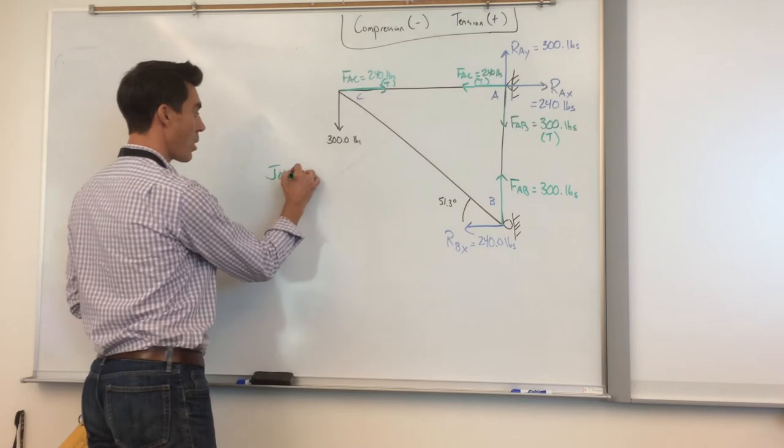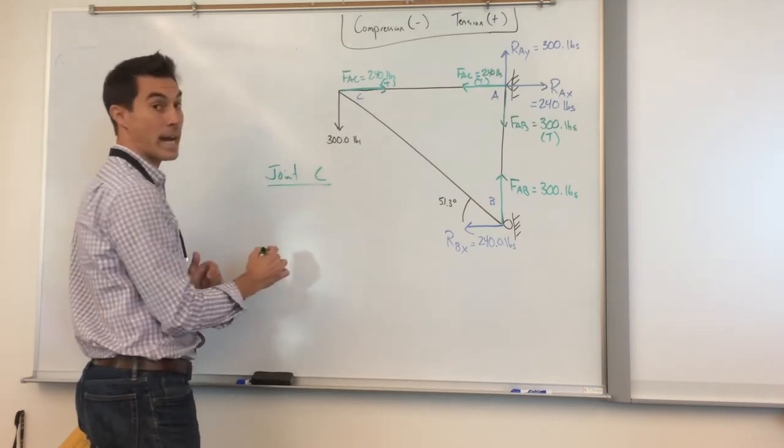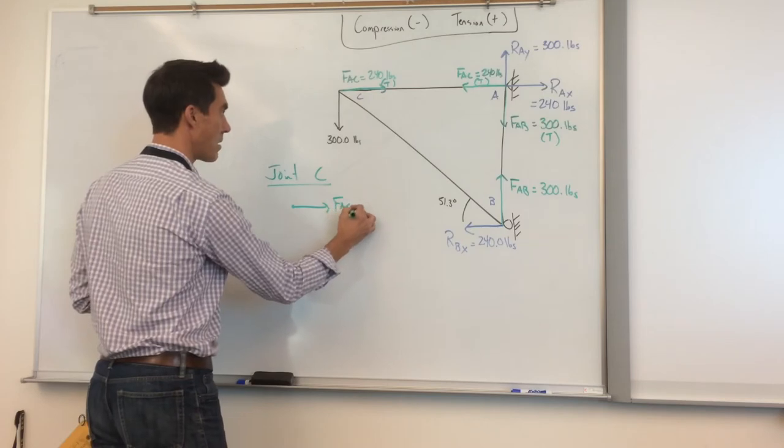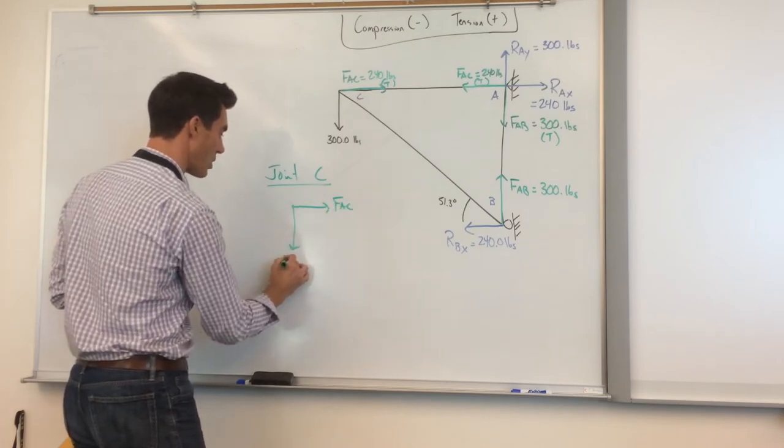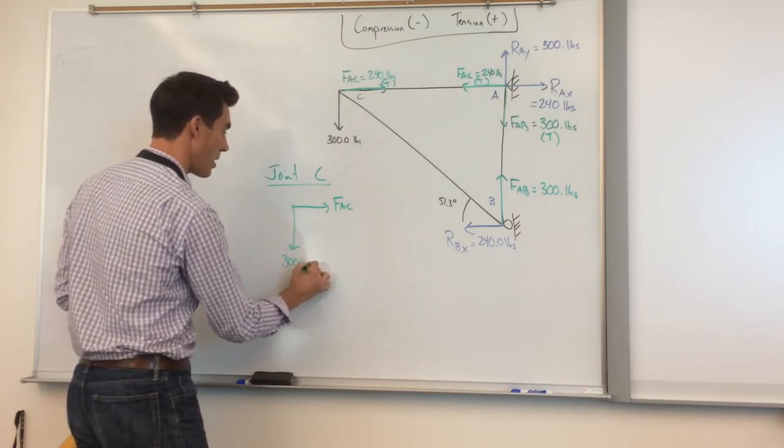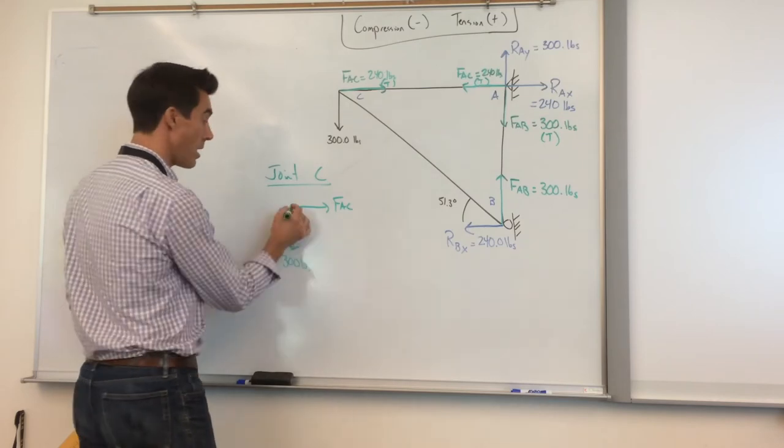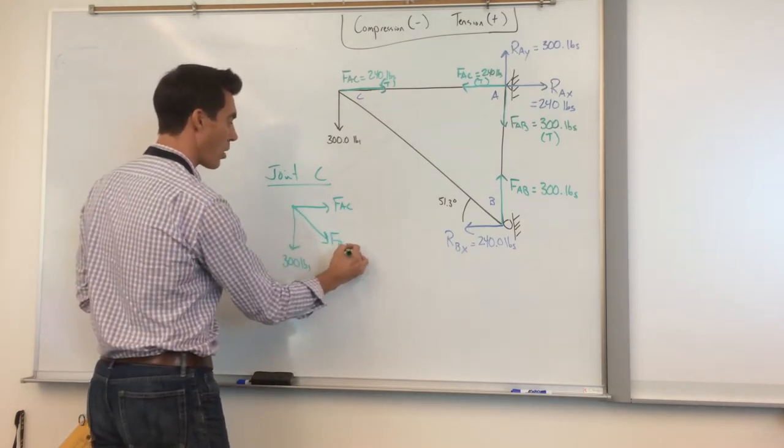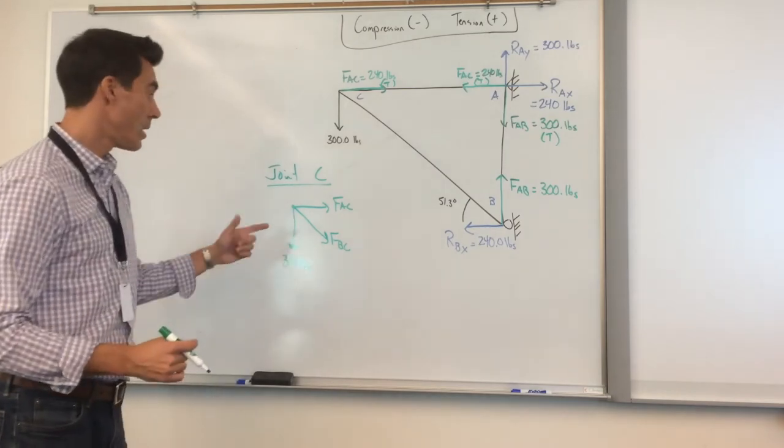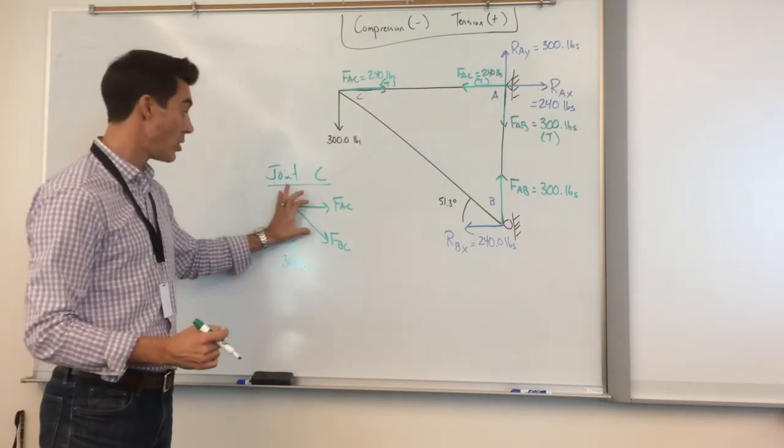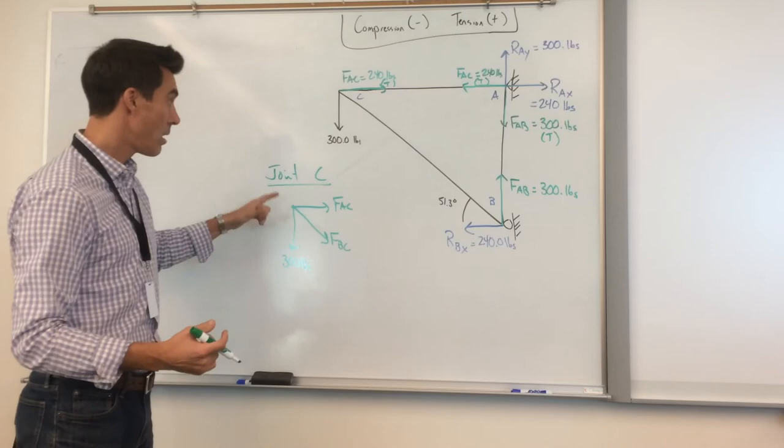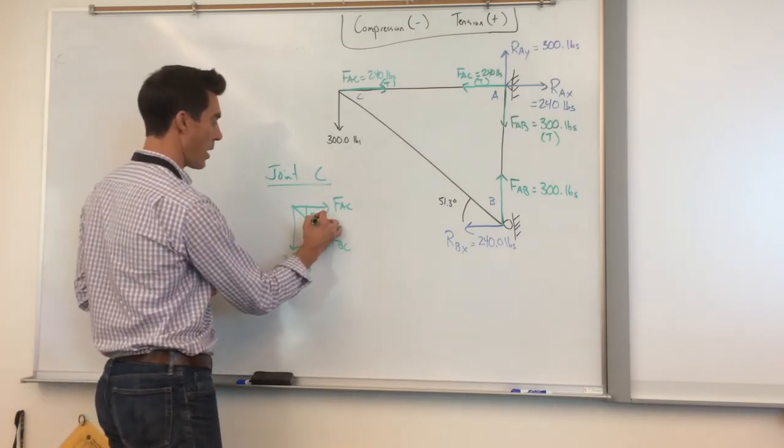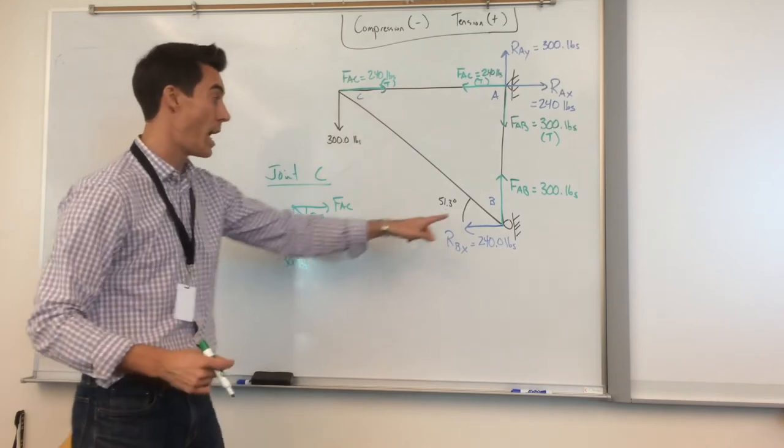We've got joint C. We always start with our free body diagram. We know we have FAC. We have the weight, which is 300 pounds put onto it. Again, we always draw members in tension. So we will draw FBC inward like so. Now you can do this one of two ways. You can use the X or the Y. Because we know that this inner angle is 51.3 degrees due to our geometry.